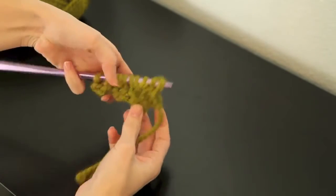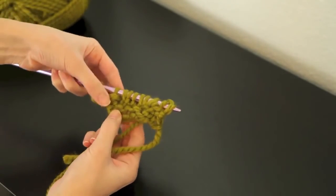That is your buttonhole row. And on the next row, once we purl, you'll be able to see the buttonholes really well.